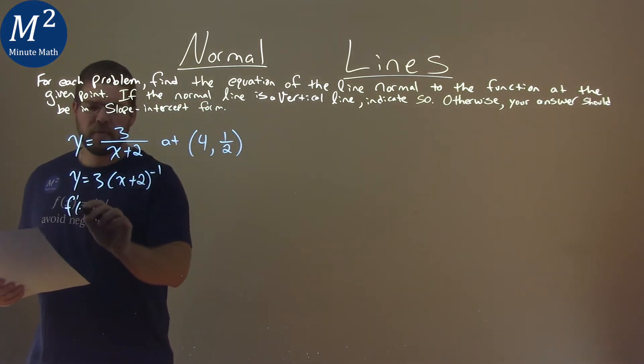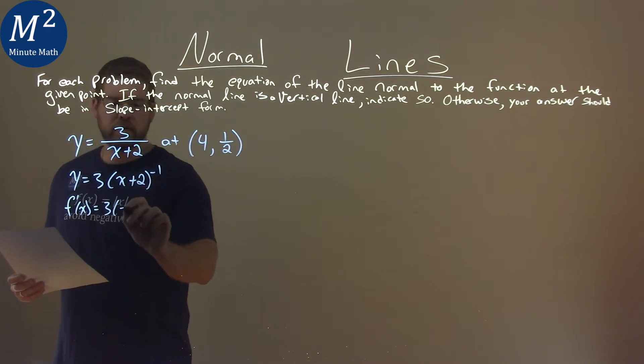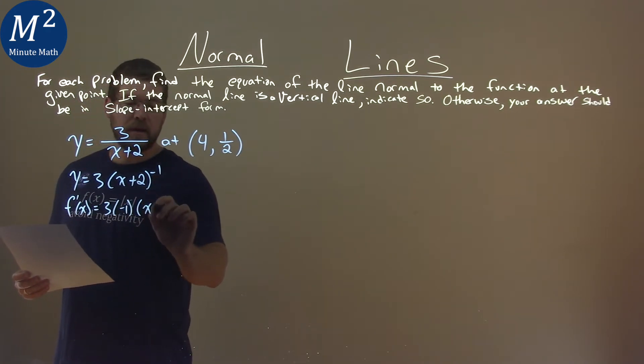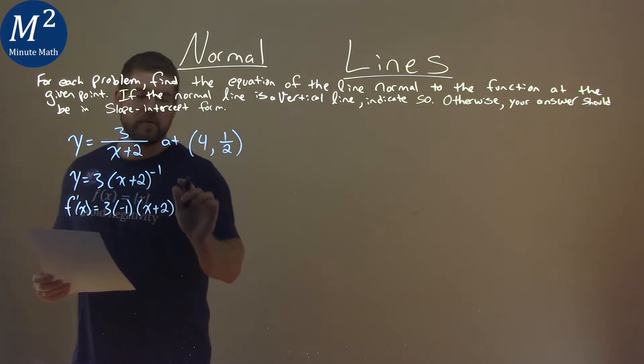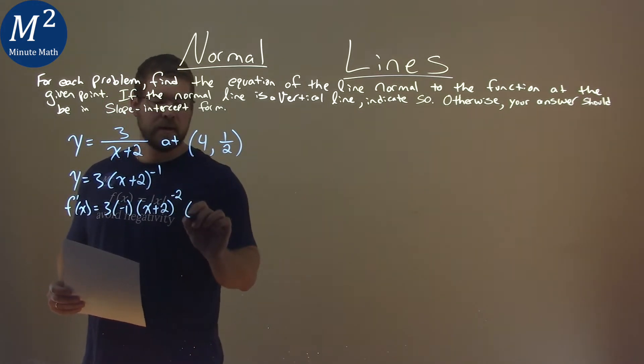So, let's go find f prime of x, and that's 3 times this exponent, negative 1, times the inside, x plus 2, raised to subtract the exponent by 1, negative 2 power, times the derivative of the inside, which is 1.